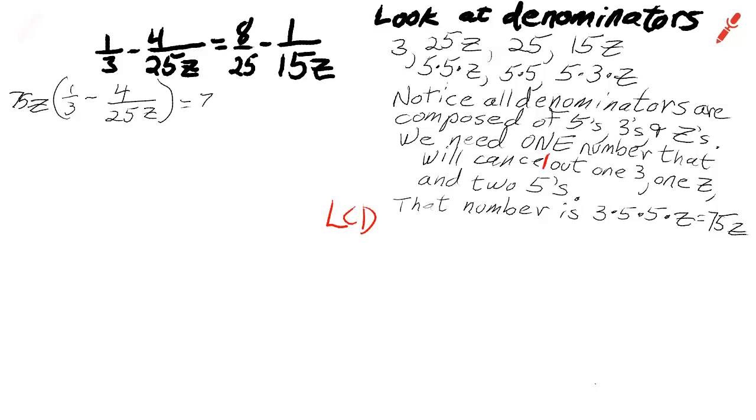Alright, I multiplied the left side by 75z. Now I'm going to multiply the right side by 75z. Then I'm going to distribute. Notice that since I'm dealing with fractions, I wrote 75z as a fraction by putting it over one.